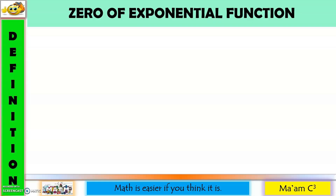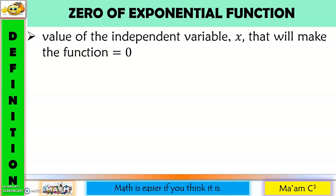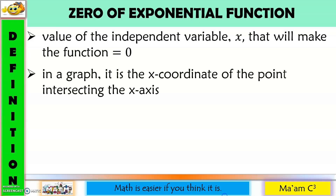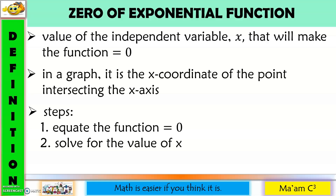Let's start first with the zero of an exponential function. It is the value of the independent variable, x, that will make the function equal to zero. In a graph, it is the x-coordinate of the point intersecting the x-axis. To solve for the zero of an exponential function, we have two steps: first, equate the function equal to zero, and then solve for the value of x.